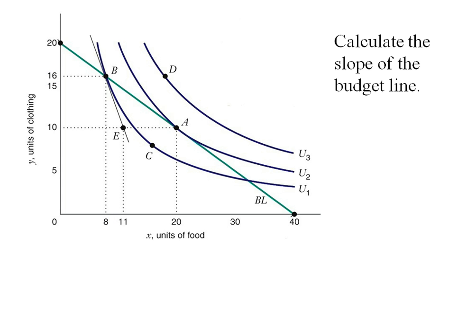Let's calculate the slope of the budget line. The slope of the budget line is always the negative Px over Py — in this case, that's the price of food divided by the price of clothing. We're given that the price of food is $20 and the price of clothing is $40, so the slope of the budget line is negative one half.